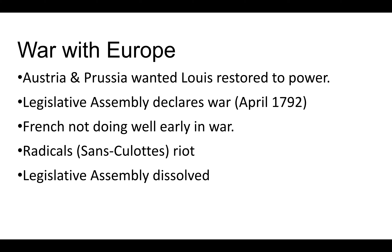While this is all going on internally, externally other monarchs in Europe — like Austria and Prussia — are watching what's happening in France, seeing the monarchy being limited and weakened dramatically. Their fear is that if this is happening in France and they allow it, it could also happen in Austria, Prussia, Russia, and other European monarchies. So the Legislative Assembly ends up declaring war in 1792 on Austria and Prussia to stop them from trying to help the nobles come back.